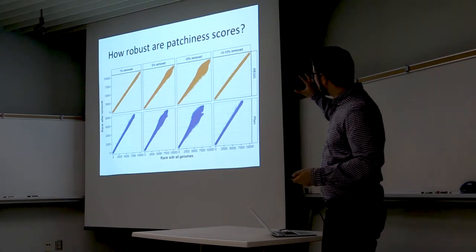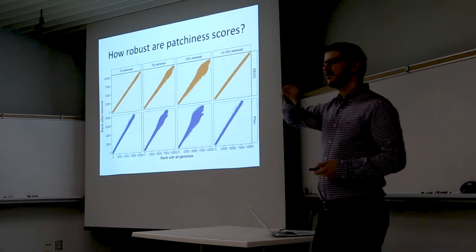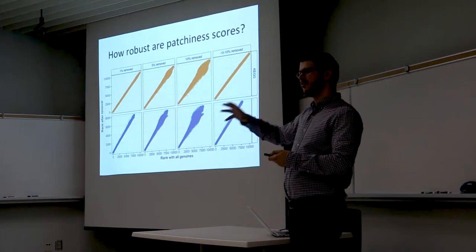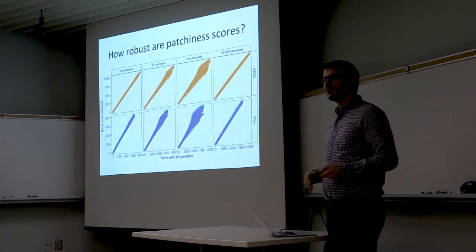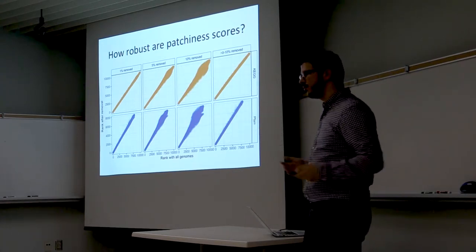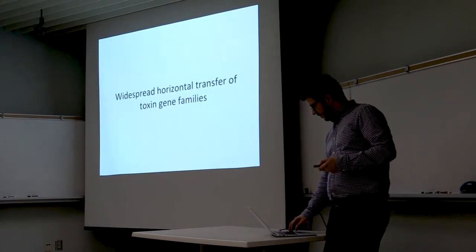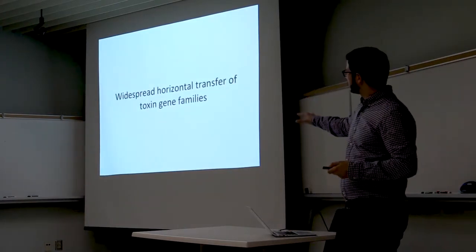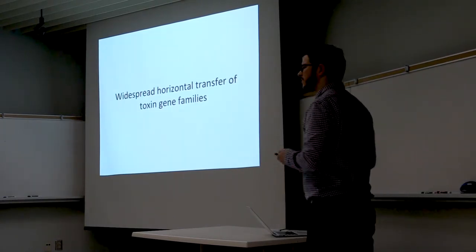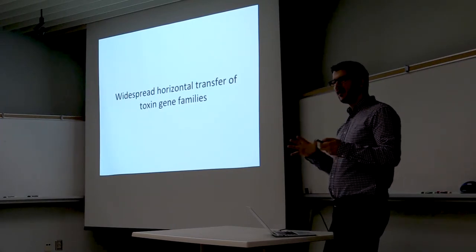You may be wondering how robust these scores are. The way we evaluated that was by removing a certain percentage of the most distant outlier taxa within a family and then recalculating these scores. We found that the signals are quite robust after removing potential outliers. Now I want to focus on some case studies over the last few years looking at microbial gene families that seem to be quite patchy.